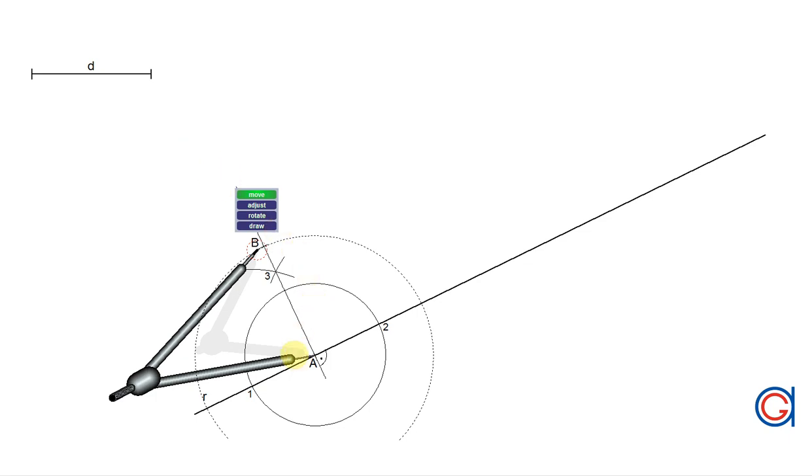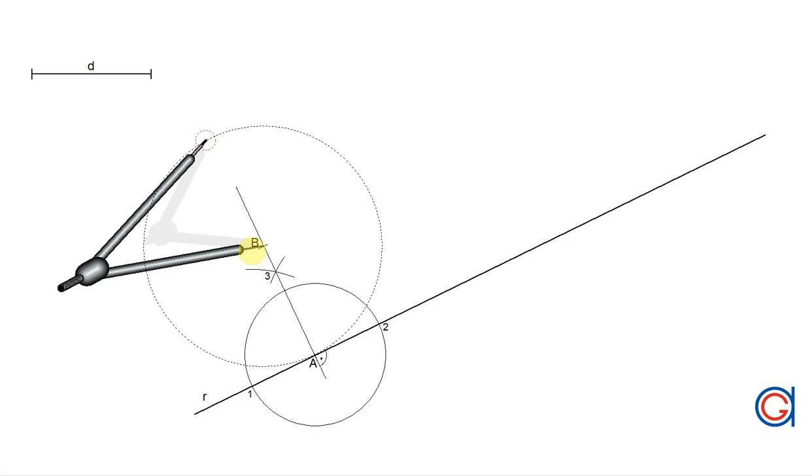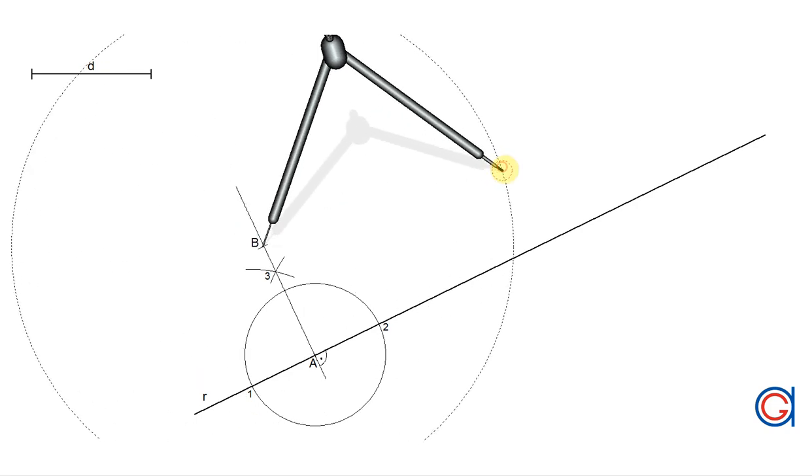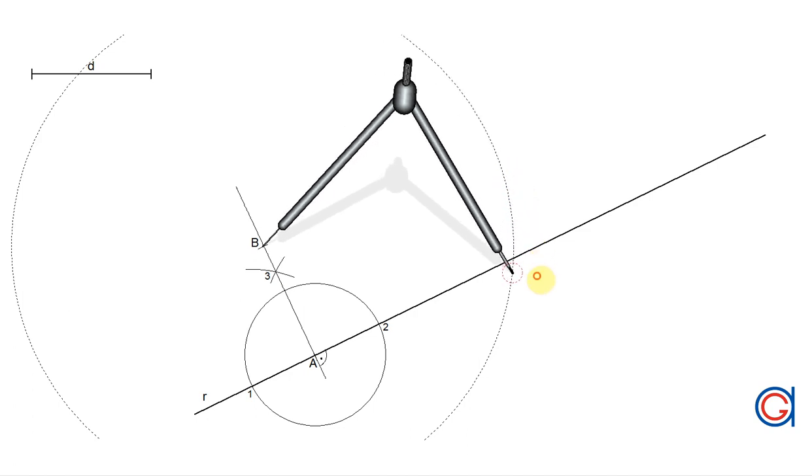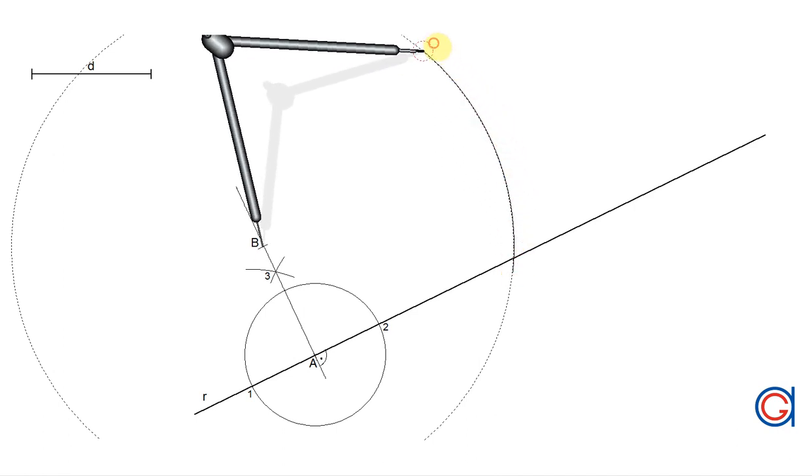Now to continue we will set our compass on point B and with any given large radius we're going to scribe an arc until it cuts the given line R, as can be seen here obtaining a new point which we will call point C.